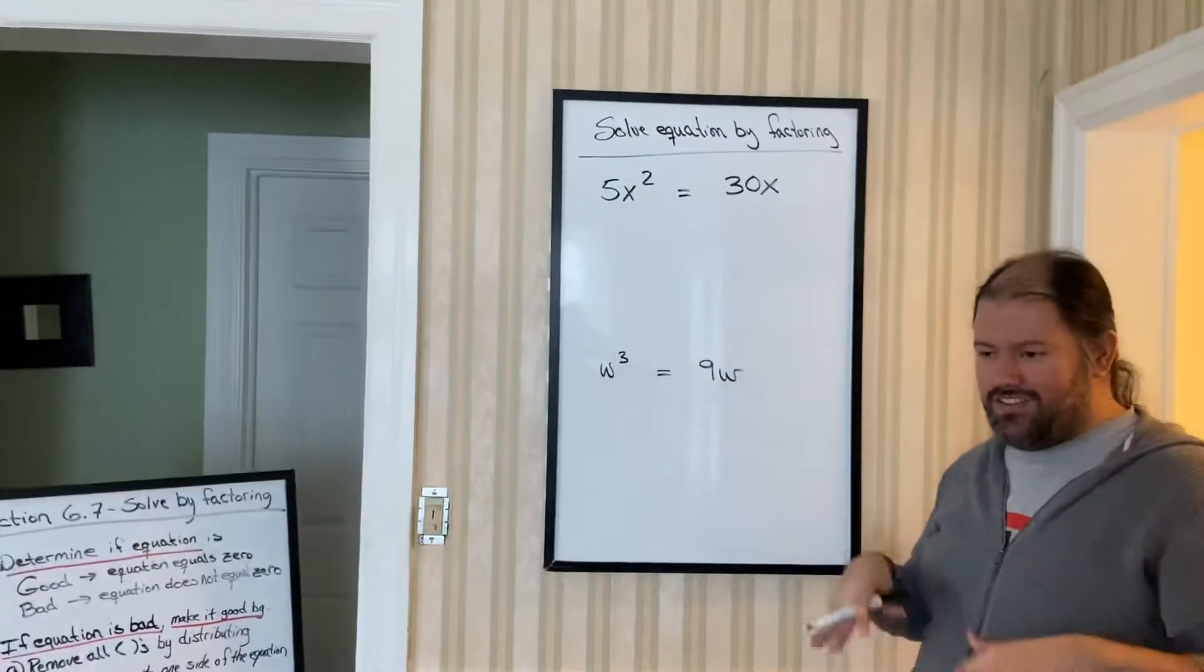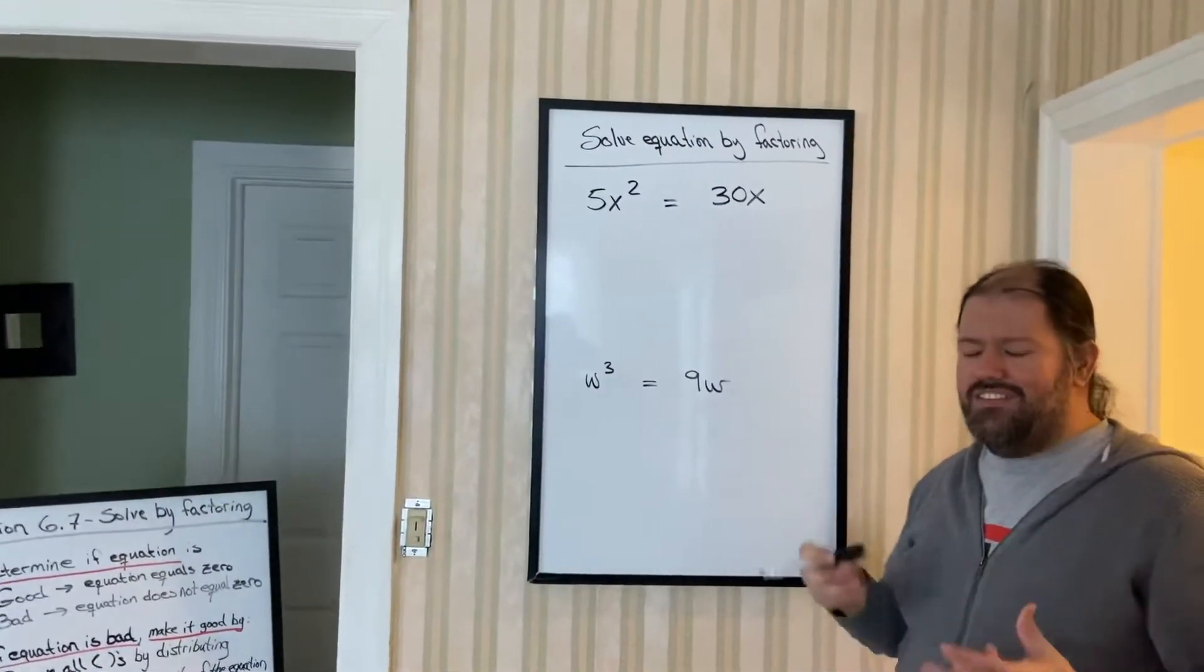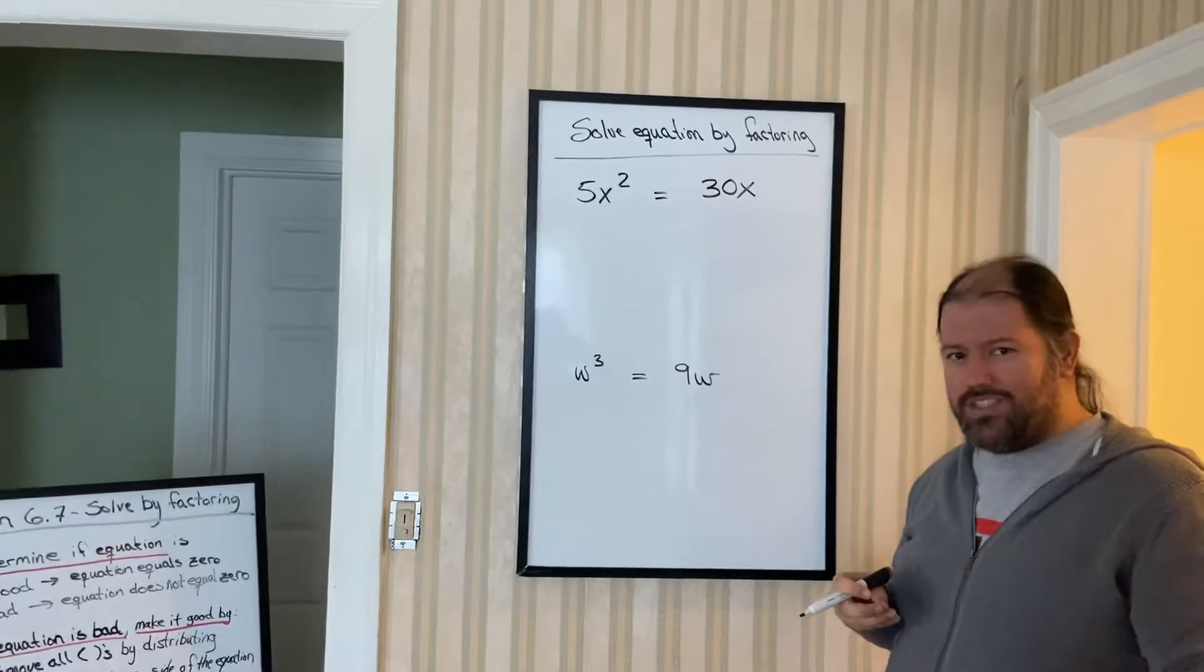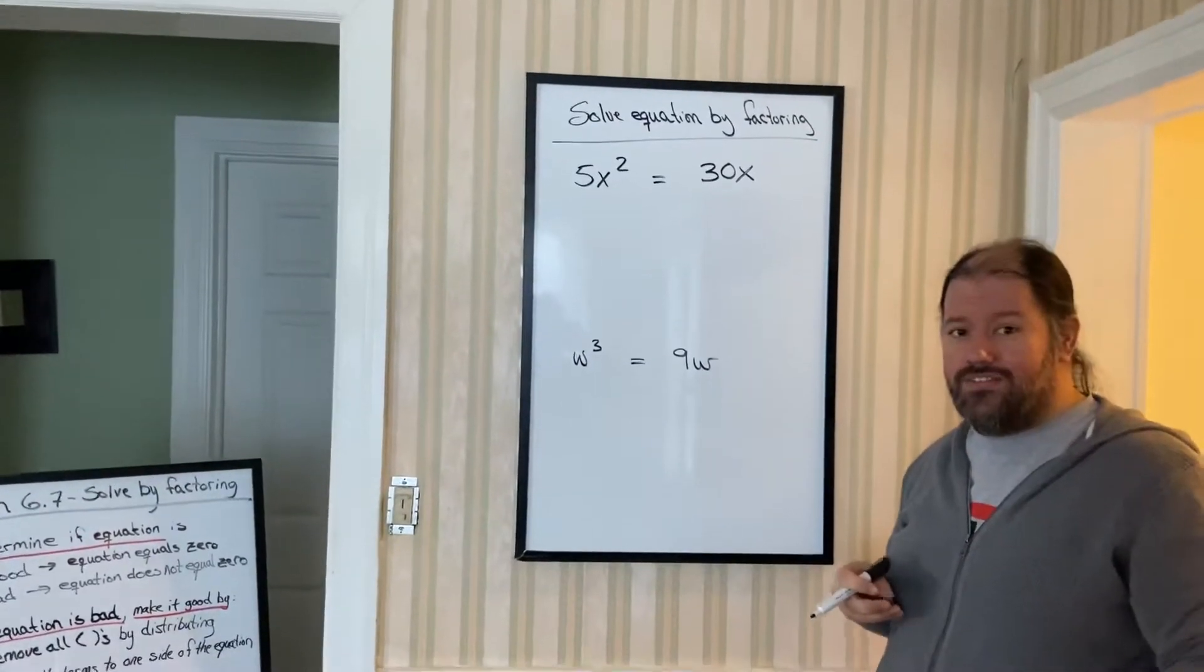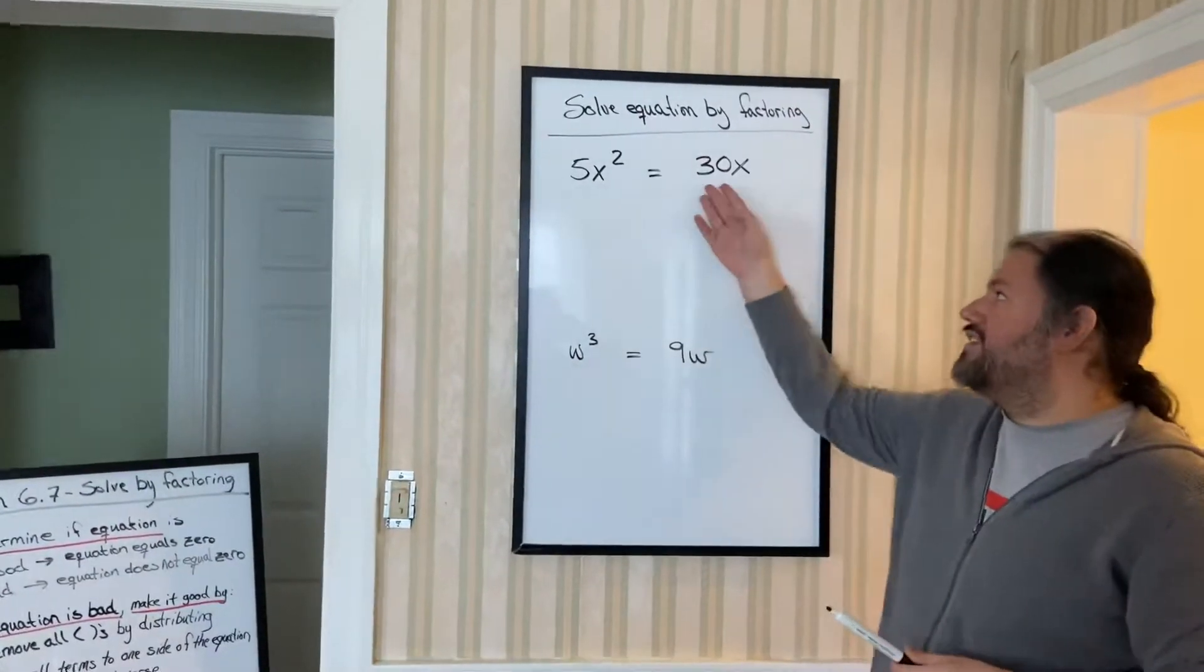So our last question that we just demonstrated, that was what we considered a good equation. Why was it a good equation? Because the original problem had an equal zero.